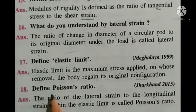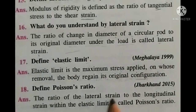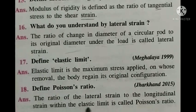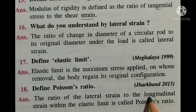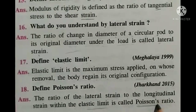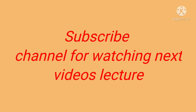Question number eighteen: define Poisson's ratio. Poisson's ratio is the ratio of lateral strain to longitudinal strain within the elastic limit.